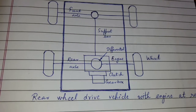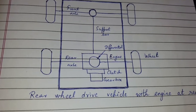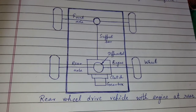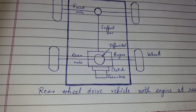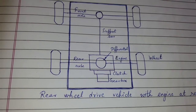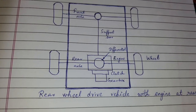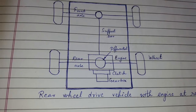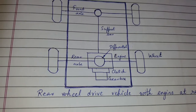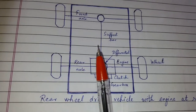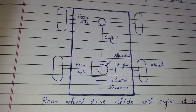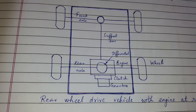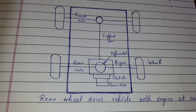Today's topic of discussion is types of vehicle layout based on vehicle drive. This is rear wheel drive vehicle with engine at rear. In this arrangement, the engine is fitted in the rear of the vehicle.